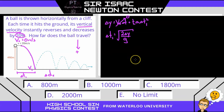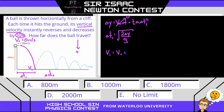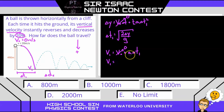The initial velocity is 0, so that term disappears. We can rearrange this to solve for time, specifically delta T1. So, if we solve for delta T1, we get it as the square root of 2 times that height delta Y, all over the acceleration A, which we know is acceleration due to gravity, 9.81 meters per second squared, so I'll just call that G.